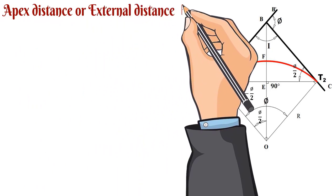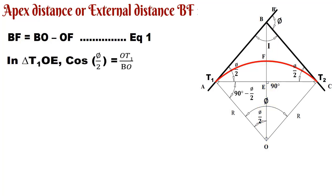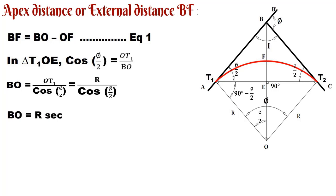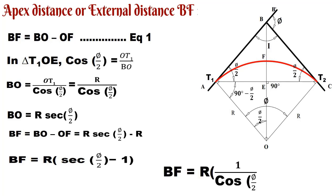Apex distance or external distance BF: BF equals BO minus OF. In triangle OT1B, cos(φ/2) equals OT1 divided by BO. Finding BO: it equals OT1 divided by cos(φ/2). Since OT1 equals R and the reciprocal of cos(φ/2) is sec(φ/2), BO equals R·sec(φ/2). Substituting into the equation, BF equals R·sec(φ/2) minus R. Taking R as common: BF equals R·(sec(φ/2) − 1), or equivalently R·(1/cos(φ/2) − 1).